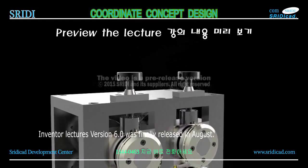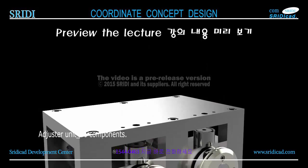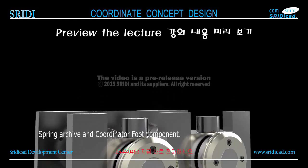3D kitty for 2015 — AutoCAD Inventor course, version 6.0 was finally released in August. Adjuster unit 6 components: top plate, unit 7, one-component spring, archive and coordinator foot component. Let's look at the components assembled.